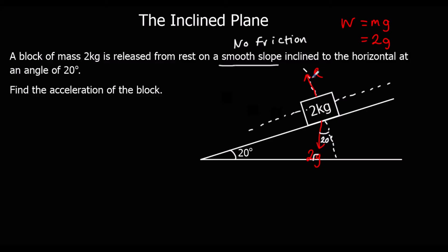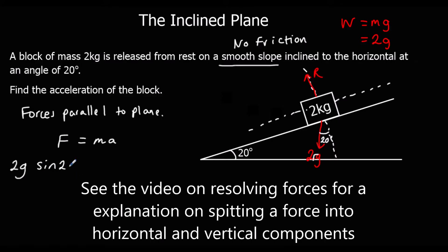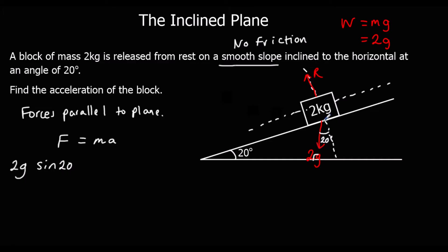We're going to look at the forces parallel to the plane. There's only one force, so we use F equals MA. The only force acting parallel is 2G sine 20, because we split the 2G force into 2G cos 20 acting perpendicular to the plane and 2G sine 20 acting parallel to the plane. So 2G sine 20 equals MA, which is 2A. Dividing both sides by 2, acceleration equals G sine 20.